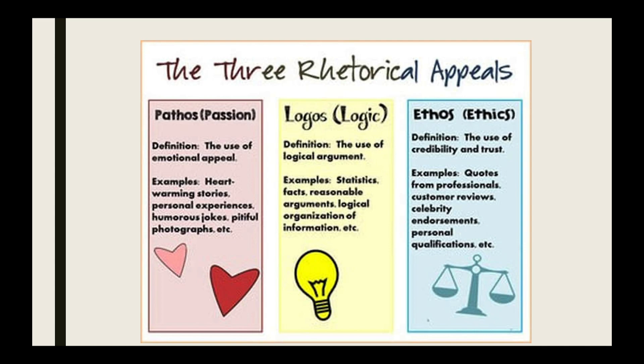Then finally we have ethos, the final rhetorical appeal. Ethos comes from the same Greek root as the word ethics. Ethos is the use of credibility and trust to make arguments or to supplement arguments. Ethos includes quotations from professionals, customer reviews, celebrity endorsements, personal qualifications, etc. Think of when you're watching a commercial and a famous celebrity appears — that celebrity is there to use their ethos to sell the product. Ethos is credibility, believability, likability — the ability to make an argument based upon someone liking you, thinking you're trustworthy, or thinking you have professional expertise.